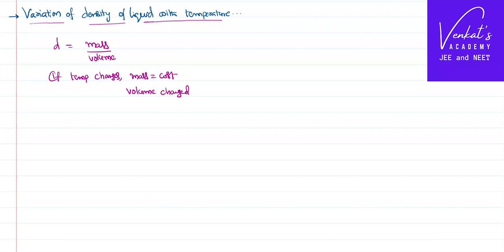I can write density at 0 degree centigrade as mass by volume at 0 degree centigrade. At T degree centigrade, density T can be written as mass remains the same, but volume at that T degree centigrade.